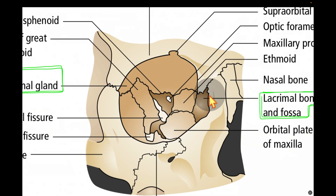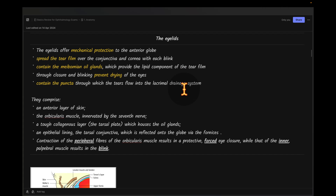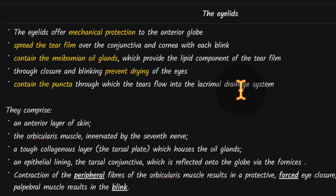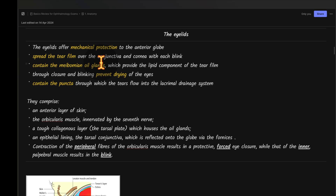On the medial and inferior medial wall of the orbit there is the lacrimal fossa, which houses the lacrimal sac. The eyelids offer mechanical protection to the globe, spread the tear film over the conjunctiva and cornea with each blink, and contain the meibomian oil glands that provide the lipid component of the tear film. Through closure and blinking, the eyelids prevent drying of the eyes.